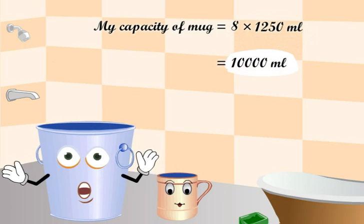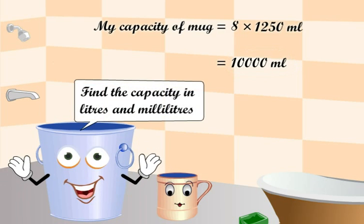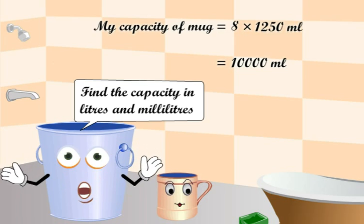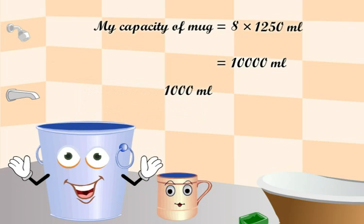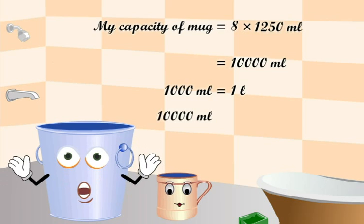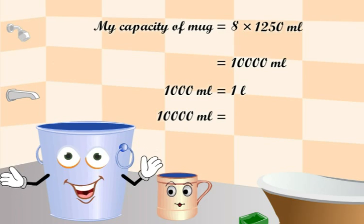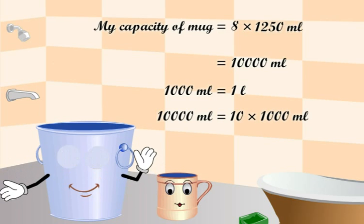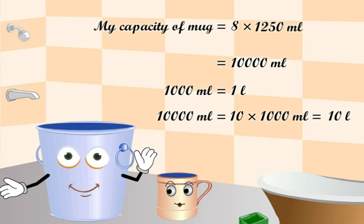This is my capacity. Let us find the capacity in liters and milliliters. You know, 1000 milliliters is equal to 1 liter. Hence, 10,000 milliliters is equal to 10 into 1000 milliliters, which is 10 liters.